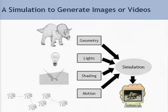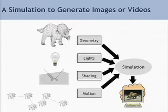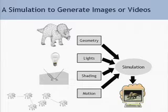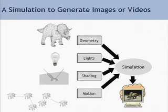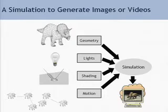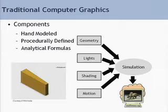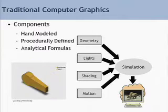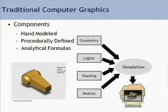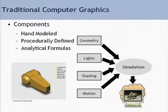Traditionally, computer graphics has always been about simulation — a simulation to generate images and videos. The core simulation interacts with a number of different components. Once we set the geometry, the lights, shading, and motion, we can start the simulator, and after some time we get an image or a sequence of images back. In traditional computer graphics, geometry, lights, shading, and motion have been defined by hand, modeled procedurally, or expressed as simple analytical formulas.